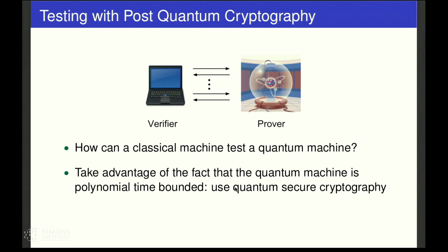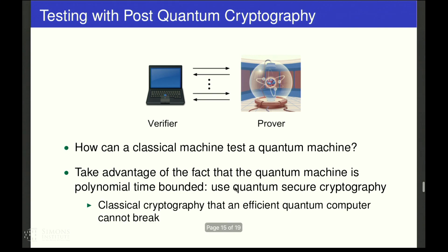We can assume that there are certain problems that even an efficient quantum computer cannot solve. In other words, I'm assuming quantum secure cryptography, which is classical cryptography that an efficient quantum computer cannot break.